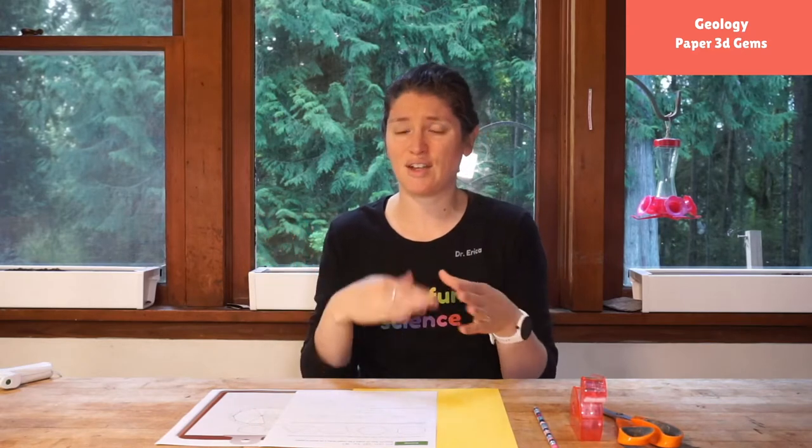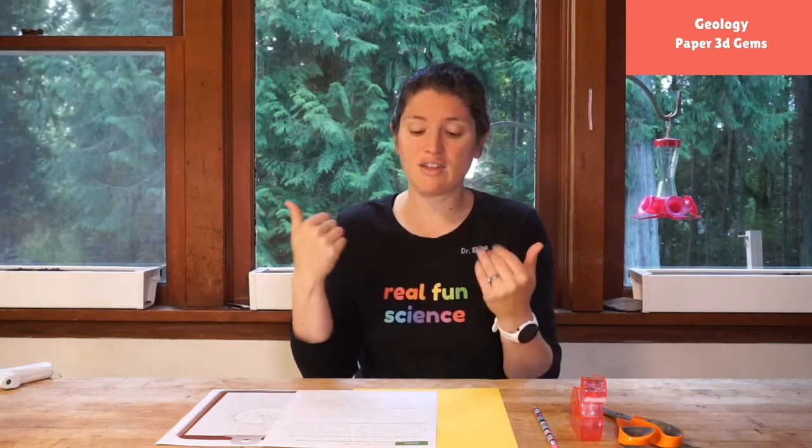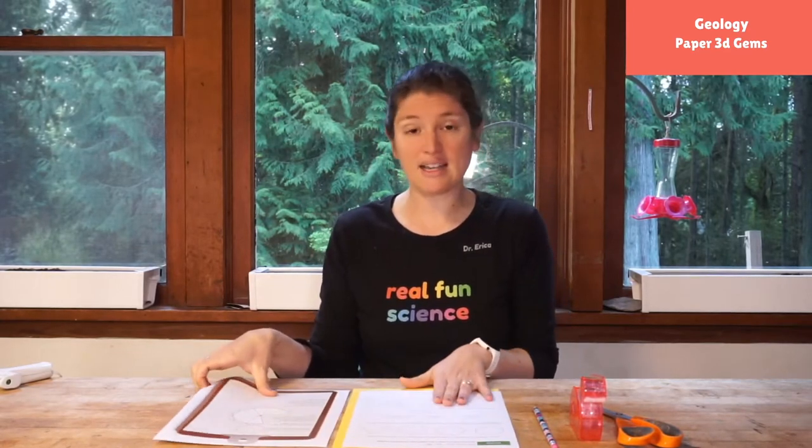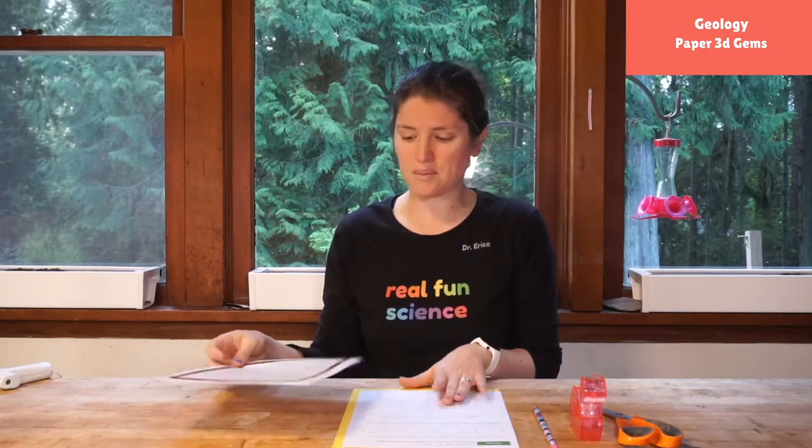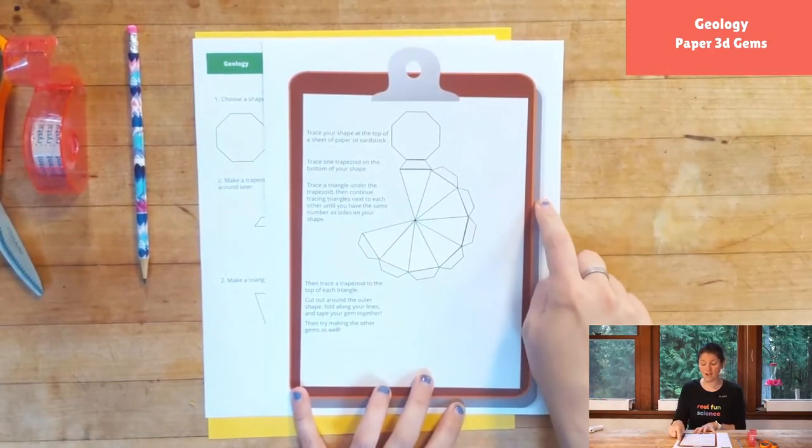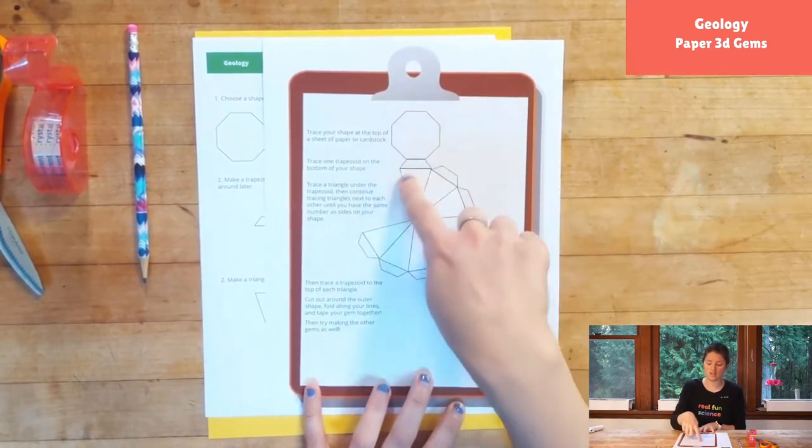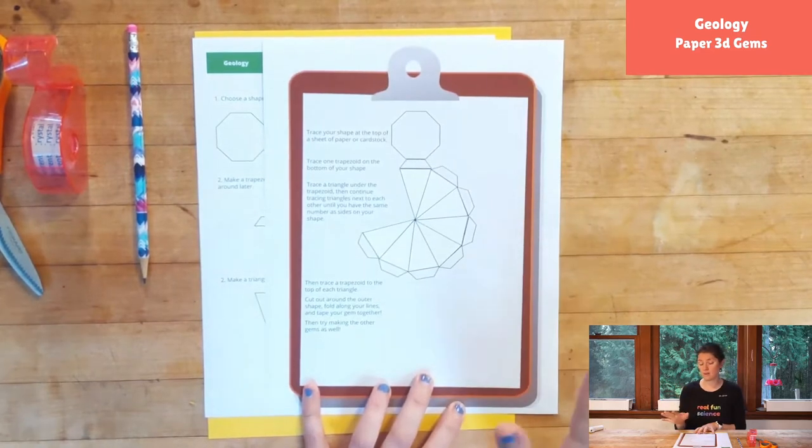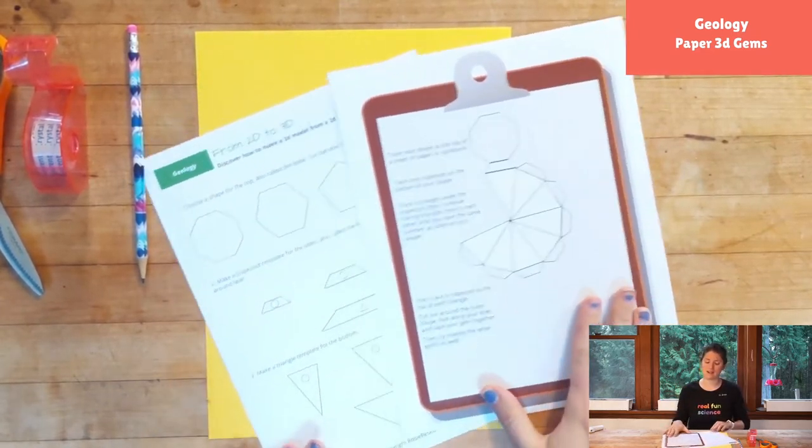We have four shapes here, but if you want a different shape you can totally do a different shape, it just needs to have all straight sides and then the number of sides will determine how many other things you need to cut out. So I have the printout that has some templates for all four of those options and then there's a little clipboard that will show you how to put it together.